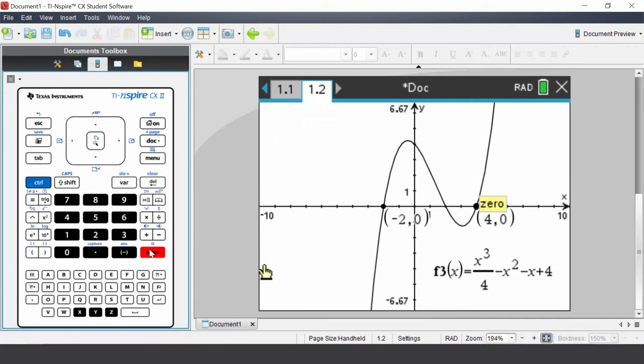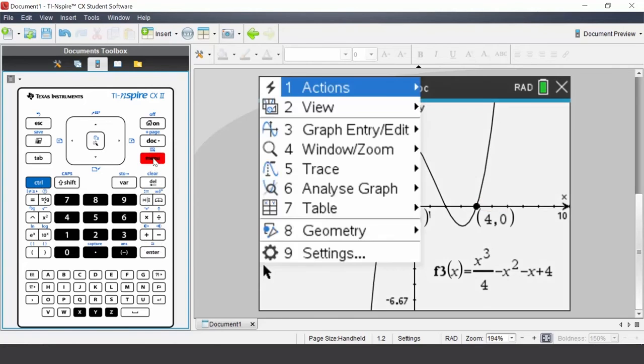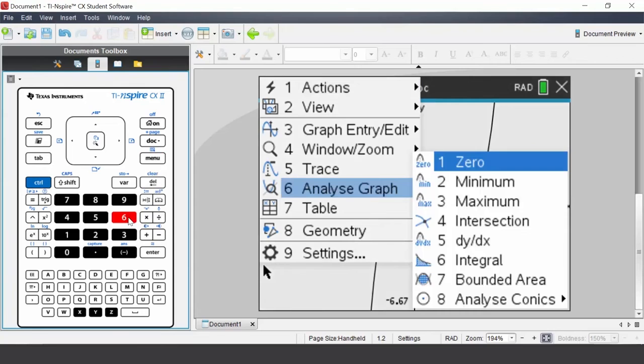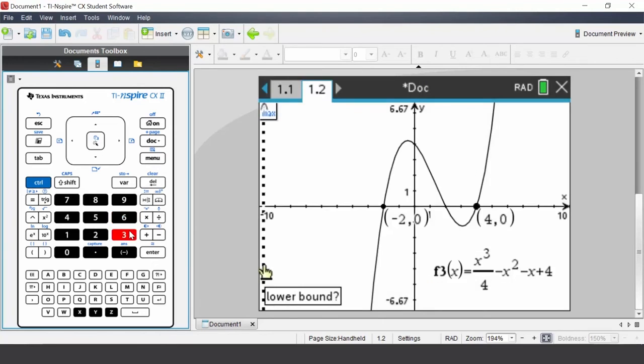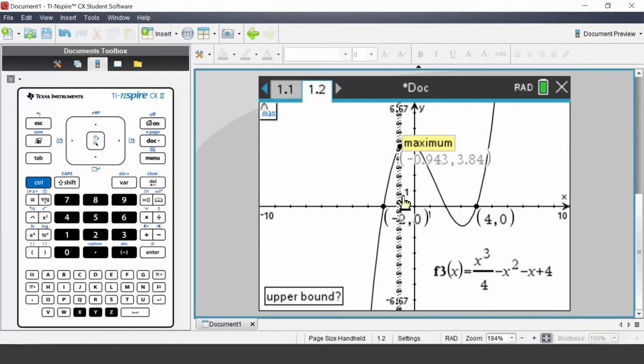Let's determine a local maximum. Press menu, select analyze graph, select maximum. Click below the maximum and past the maximum.